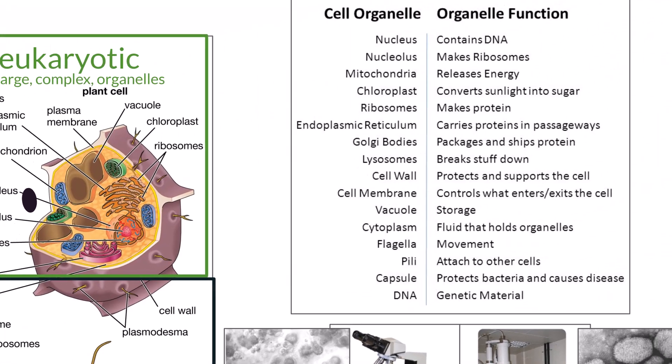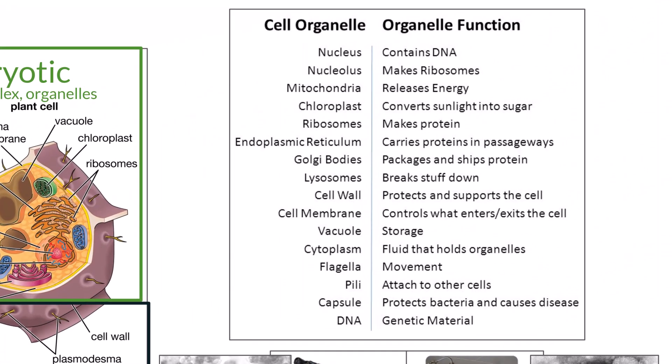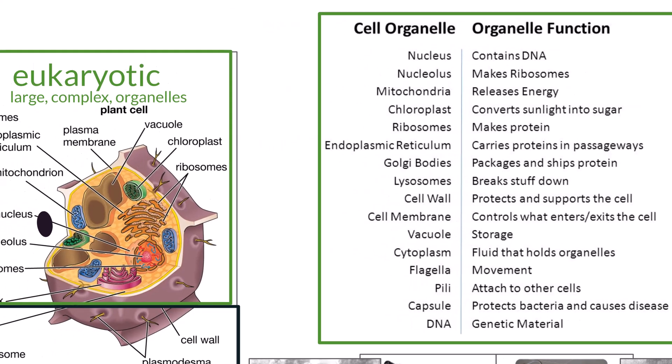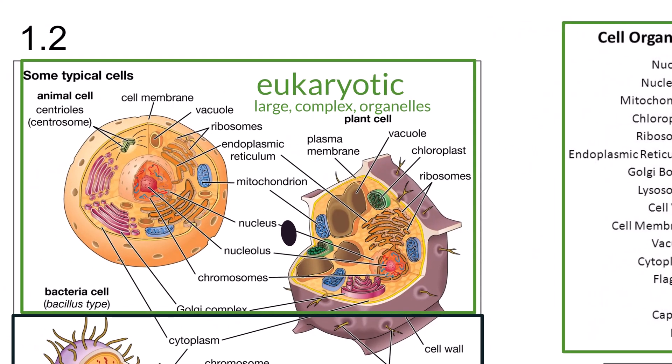For the IB exam, you need to know the functions of all of the major organelles within eukaryotic cells, which are listed here. And you need to know the differences between the two major types of eukaryotic cells, which are plant cells and animal cells.